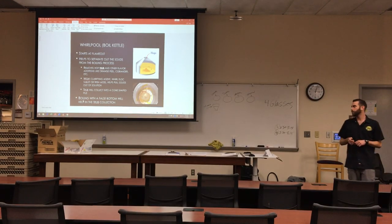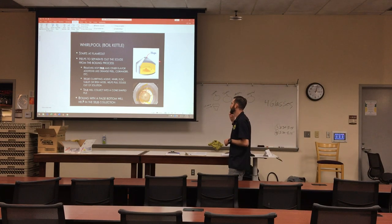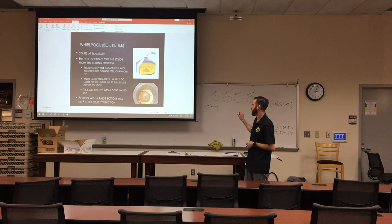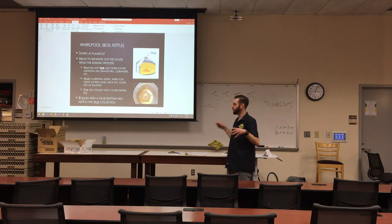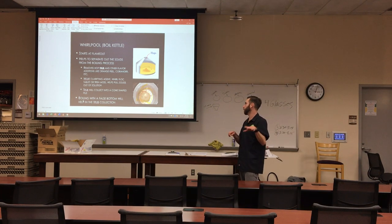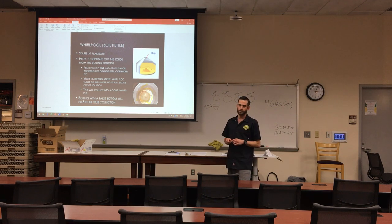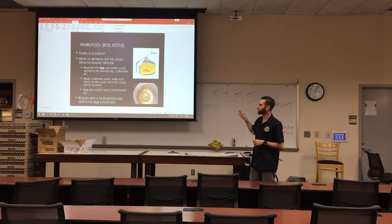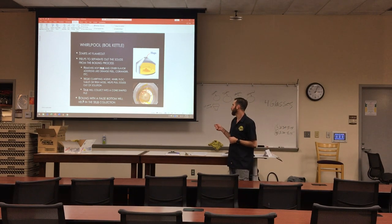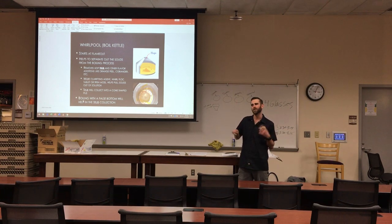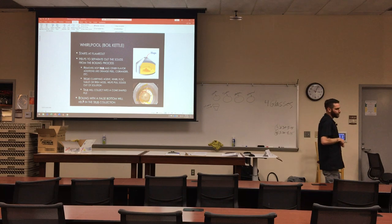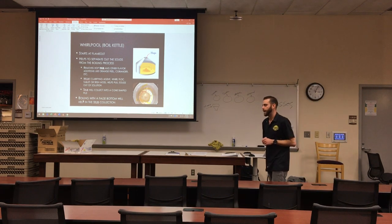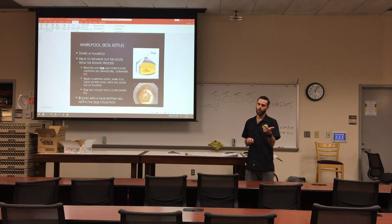After we're done boiling our wort, we bring it from our kettle into our whirlpool. It's got a little hose here creating the whirlpool technique. You generally have a conical bottom in your whirlpool. You're collecting what's called trub — trub is a bunch of protein that collected during the boil: could be hop material, could be protein break from the wort. We don't want that going into our fermenter because it can lag fermentation and create off flavors.